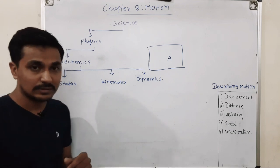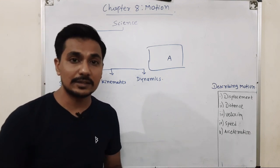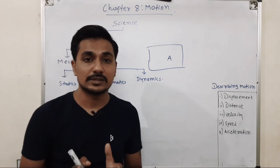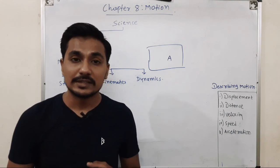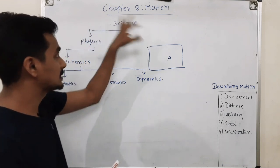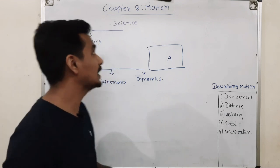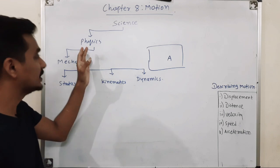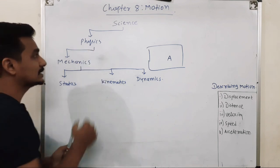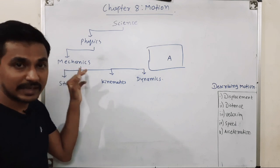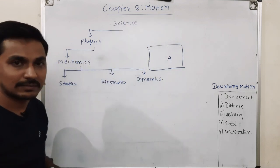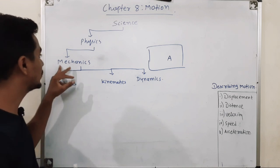Before discussing motion and the related terms in this chapter, we first need to discuss in which branch we study motion. This topic is in the textbook of science. Science is divided into many groups: physics, chemistry, biology, mathematics, and many others. Physics is further divided into many types — mechanics, astrophysics, and so on.